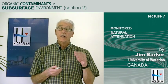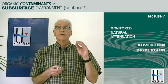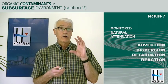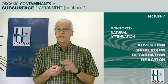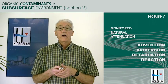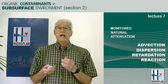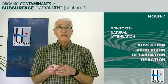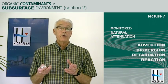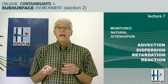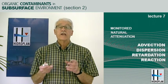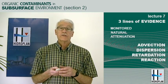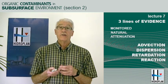We've outlined the processes — advection, dispersion, retardation, and reaction — that are important in this process and have to be considered. What I'd like to do now is introduce you to some very simplified field examples that illustrate these processes and also illustrate in a very simplistic way how we might develop the evidence to support natural attenuation.